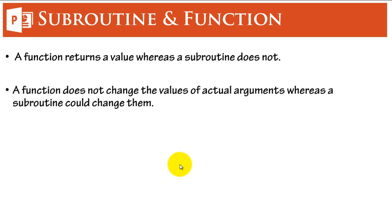A function does not change the values of actual arguments whereas a subroutine could change them. The values of the arguments can be changed within the subroutine whereas the function can only use those arguments to calculate and they cannot change those internally. As I said, this is not the only difference. However, this is the major one.